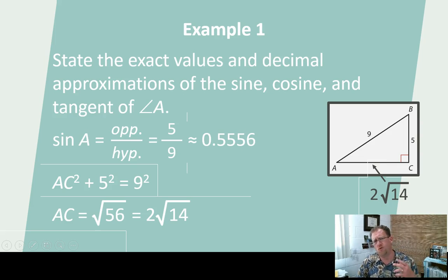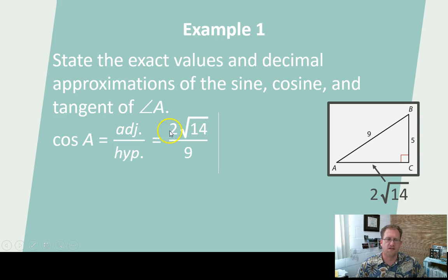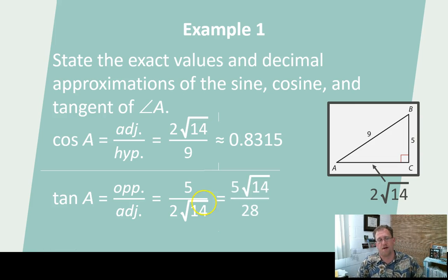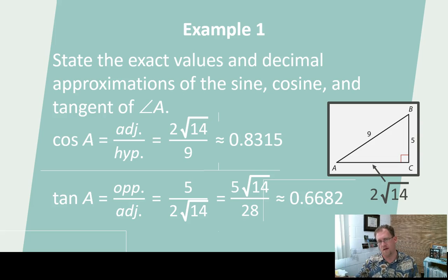So the side length here is 2 radical 14. I can use that to get the tangent of A and the cosine of A. Cosine of A is adjacent over hypotenuse: 2 radical 14 divided by 9, which is about as simplified as I can get — as a decimal, that's approximately 0.8135. And then the tangent of A is opposite divided by adjacent: 5 divided by 2 radical 14. As a decimal equivalent, I get 0.6682. You can also rationalize this. These are all just opposite over adjacent, adjacent over hypotenuse, and so on — these are ratios you will come to know and love.